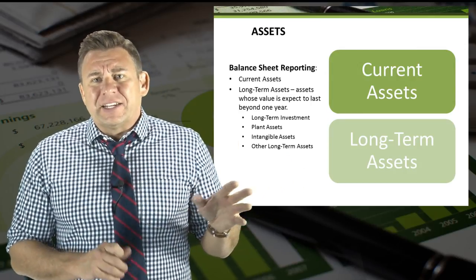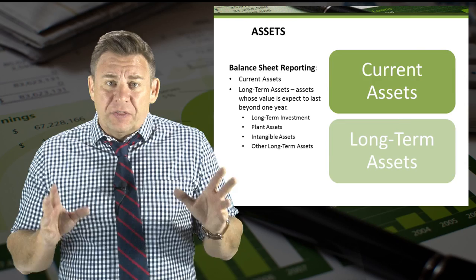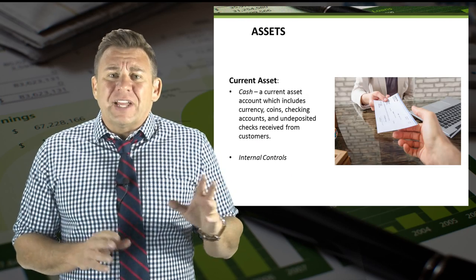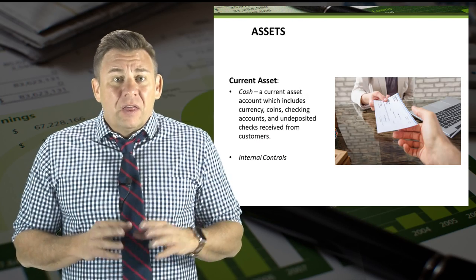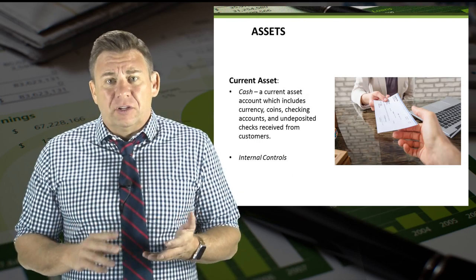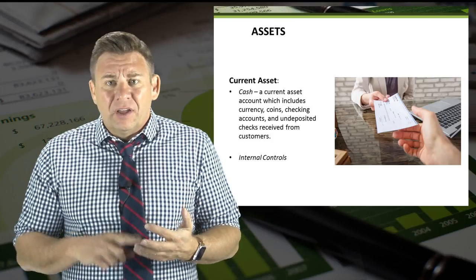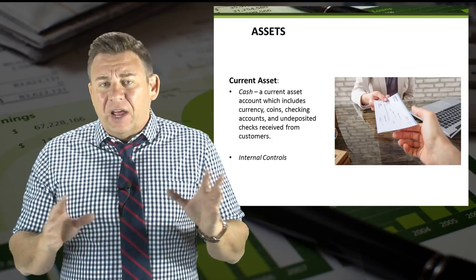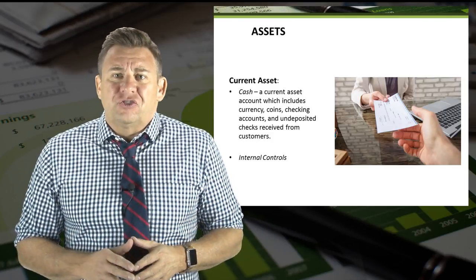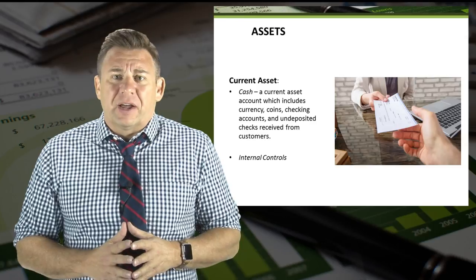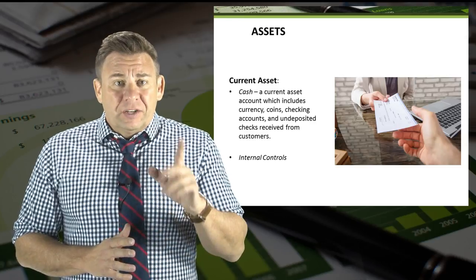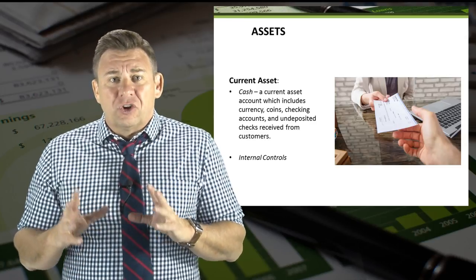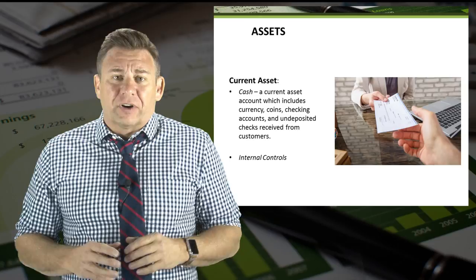Let's look at the four assets we're going to cover in this module. Our first asset is cash. The cash account includes currency, coins, checking accounts, and undeposited checks received from our customers. Additionally, we will learn about internal controls over cash.